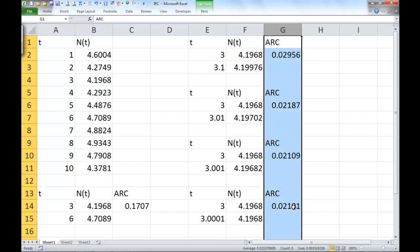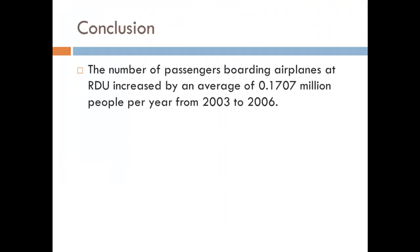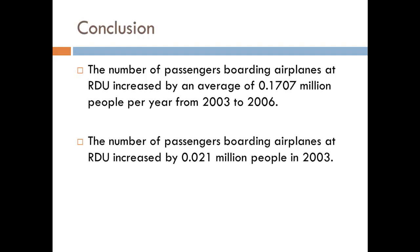This tells us two things that we've looked at. First, the number of passengers boarding airplanes at RDU increased by an average of 0.1707 million people per year from 2003 to 2006. This was the average rate of change, the change per year over several year period.